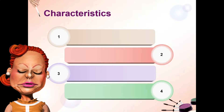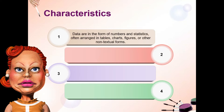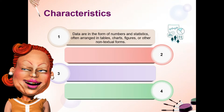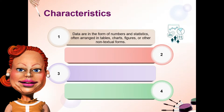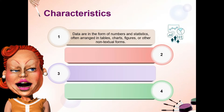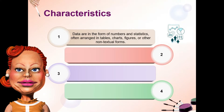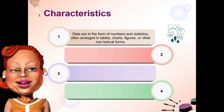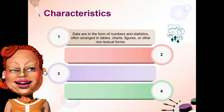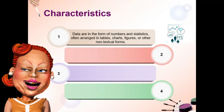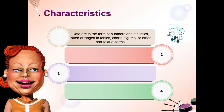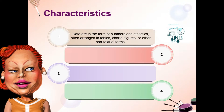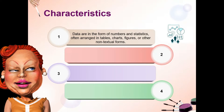And finally, are the characteristics. Una, data are in the form of numbers and statistics, often arranged in tables, charts, figures, or other non-textual forms. Katulad nga ng chika ko sa inyo kanina, ang quantitative research ay nakarely sa mga numerical data. Dahil ang numbers ay nakocompute, napaprocess gamit ng statistics, para nang sa ganun ay mabigyan ang kahulugan ng mga bagay na gusto nating pag-aralan.